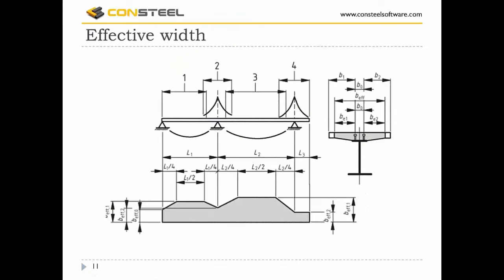The next step is to assess the width of the flange available to act compositely with the steel section. Eurocode gives various methods for calculating the effective width. During elastic global analysis, a constant effective width is assumed over the whole span. For design purposes, this effective breadth varies along each span — I will talk about this in more detail later.